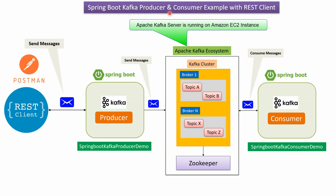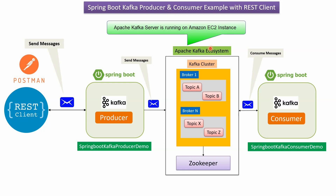In this video tutorial I will explain Spring Boot Kafka producer consumer example with REST client. Here you can see the Apache Kafka ecosystem and Kafka cluster. It has brokers, and each broker has topics. In this example we will use Postman as REST client. The REST client sends messages to the Spring Boot Kafka producer demo application, which has a Kafka producer client that sends messages to Apache Kafka topics. The Spring Boot Kafka consumer demo application has a Kafka consumer client that consumes messages from the Apache Kafka topic.